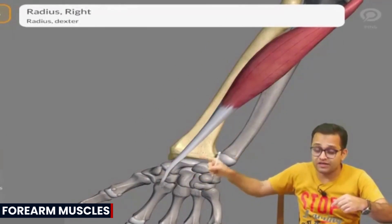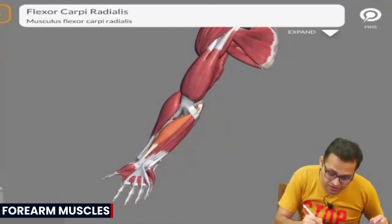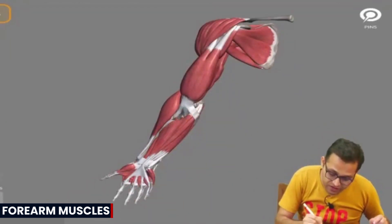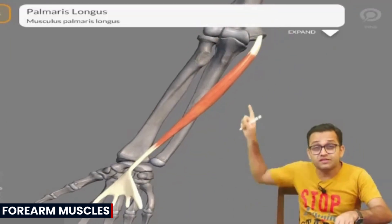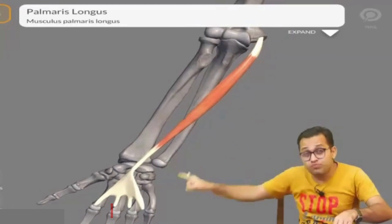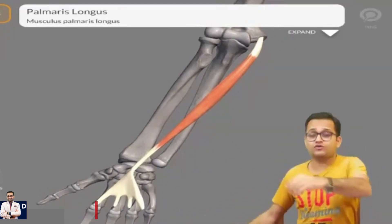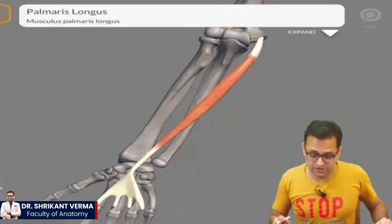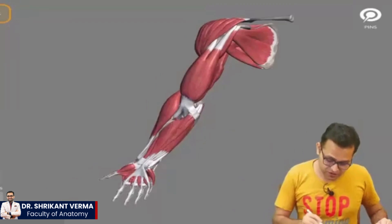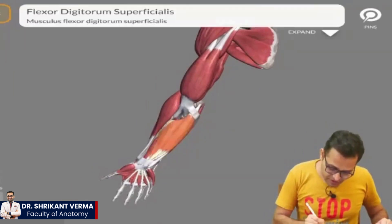Flexor carpi radialis — can you see this muscle? It is reaching to the palm. It is very long, so it reaches the palm — it is the longest.